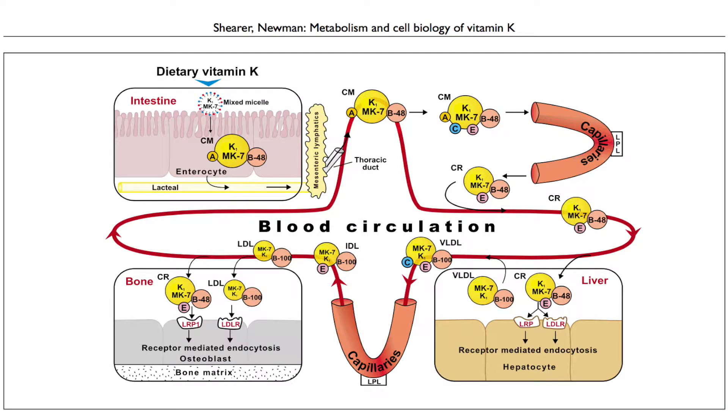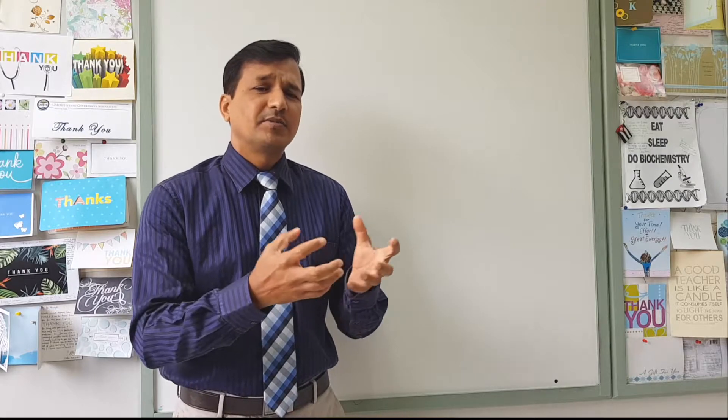What tissues express apolipoprotein E receptors or remnant receptors? These remnant receptors, also referred to as LDL receptor protein 1 (LRP1), are heavily expressed in the liver, but also in bone - specifically osteoblasts express remnant receptors. The phylloquinone and menaquinones taken up by the liver are loaded onto apolipoprotein B100 and become part of VLDL. VLDL enters the circulation, is broken down into IDL, then into LDL, which is taken up by LDL receptors in a variety of extra-hepatic tissues - that is how menaquinones and phylloquinones reach extra-hepatic tissues.